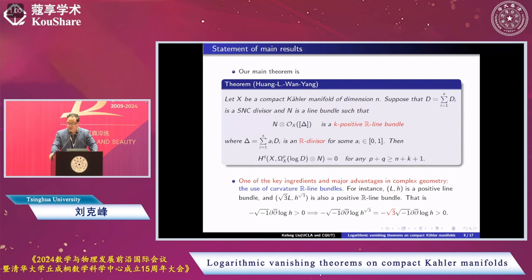So this is our vanishing theorem using geometry. Here we use the notion of real line bundle, R line bundle. We use it as a curvature, for example. This is more flexible for our purpose.